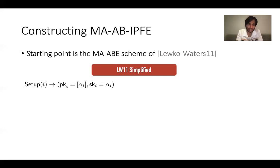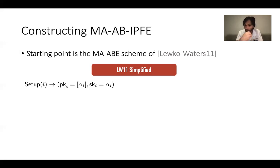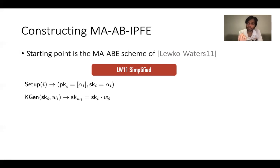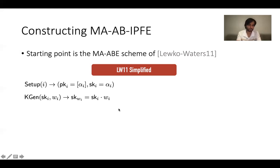In the Luco-Waters construction, each authority i samples a random exponent α_i. The public key is the encoding [α_i] in the base group, and the master secret key is the exponent α_i. To generate a secret key for an attribute bit w_i — recall, there are only attribute bits, no key vectors — the partial secret key is simply the product of the exponent with the bit w_i. So if you satisfy the attribute you learn α_i; otherwise you do not.